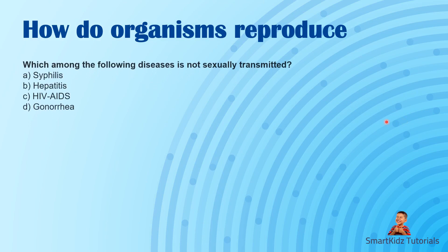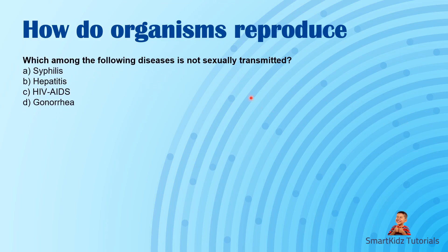Which of the following diseases is not sexually transmitted? Syphilis is transmitted sexually, HIV/AIDS is sexually transmitted, and gonorrhea is also sexual. So the odd one out here is hepatitis.